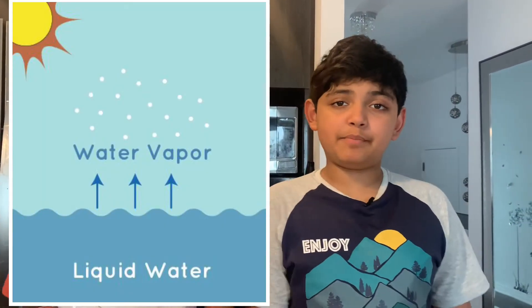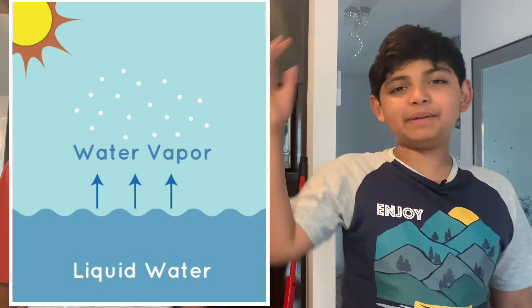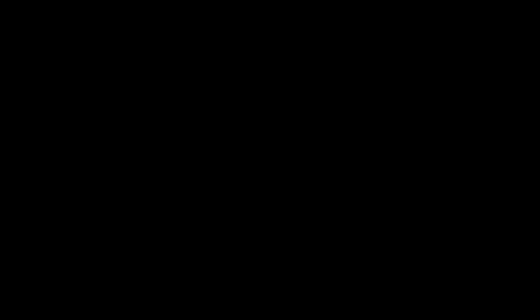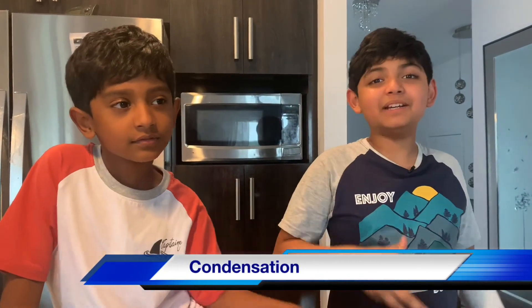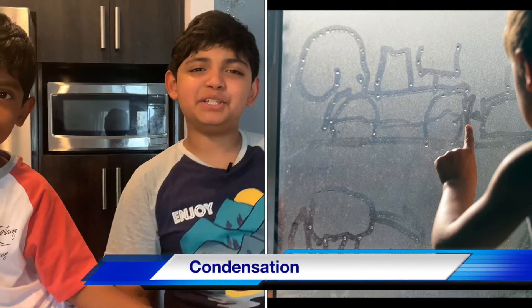Nobody can see water vapor because it's too tiny. Water vapor is like hot air — when air becomes hot, it goes up. When water vapor goes up, it becomes cool. And when it becomes cool, it becomes water again. And that's called condensation.